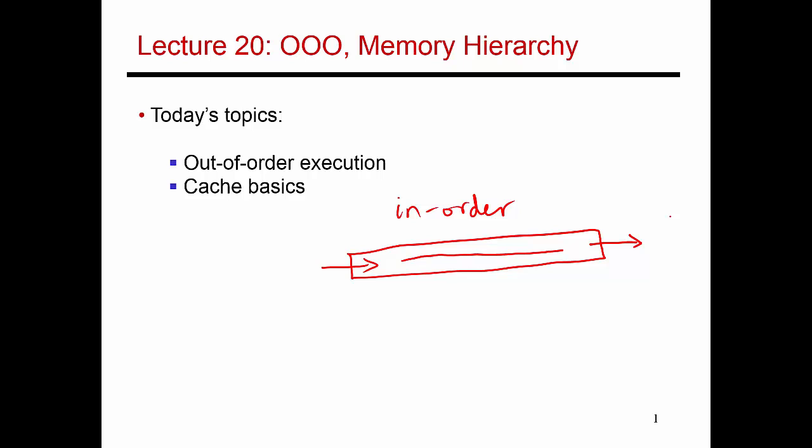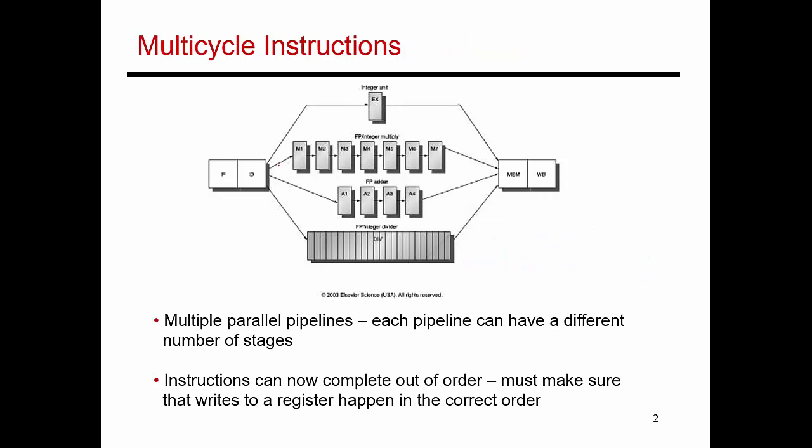I'm going to introduce this notion of an out-of-order processor that adds more hardware to this basic processor that we've designed so far, and that support allows you to do multiple instructions in parallel and allows you to not be limited by one instruction being held up because of dependencies. But before I describe that design, let me continue this in-order model and add a few things to it that move us closer to an out-of-order processor without actually being an out-of-order processor.